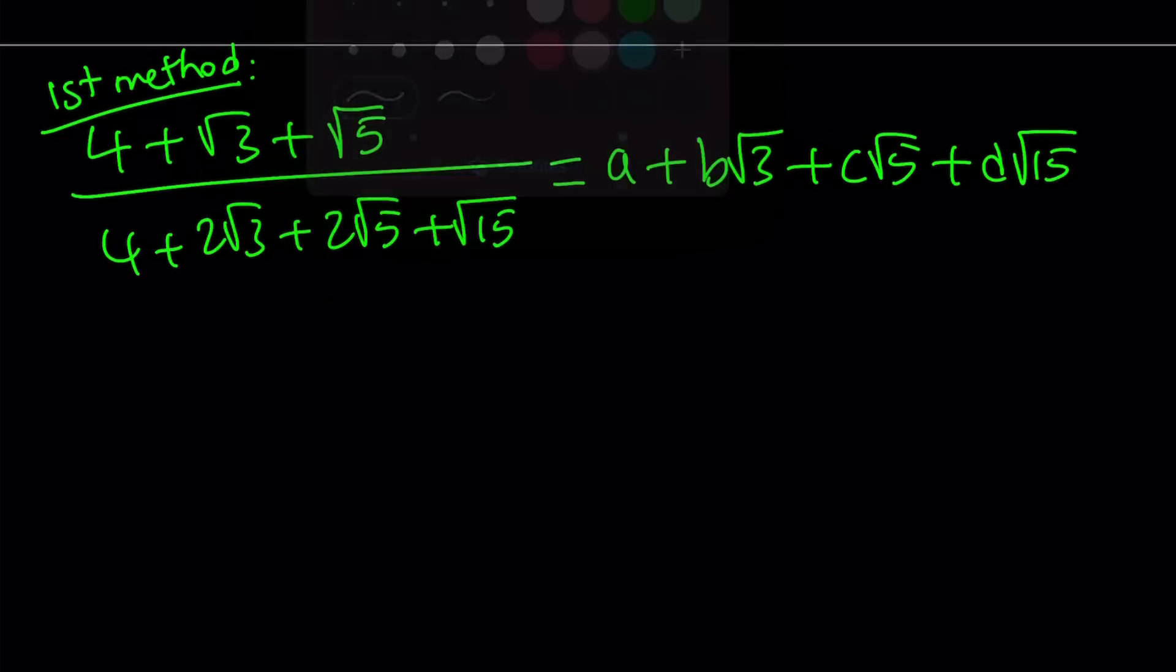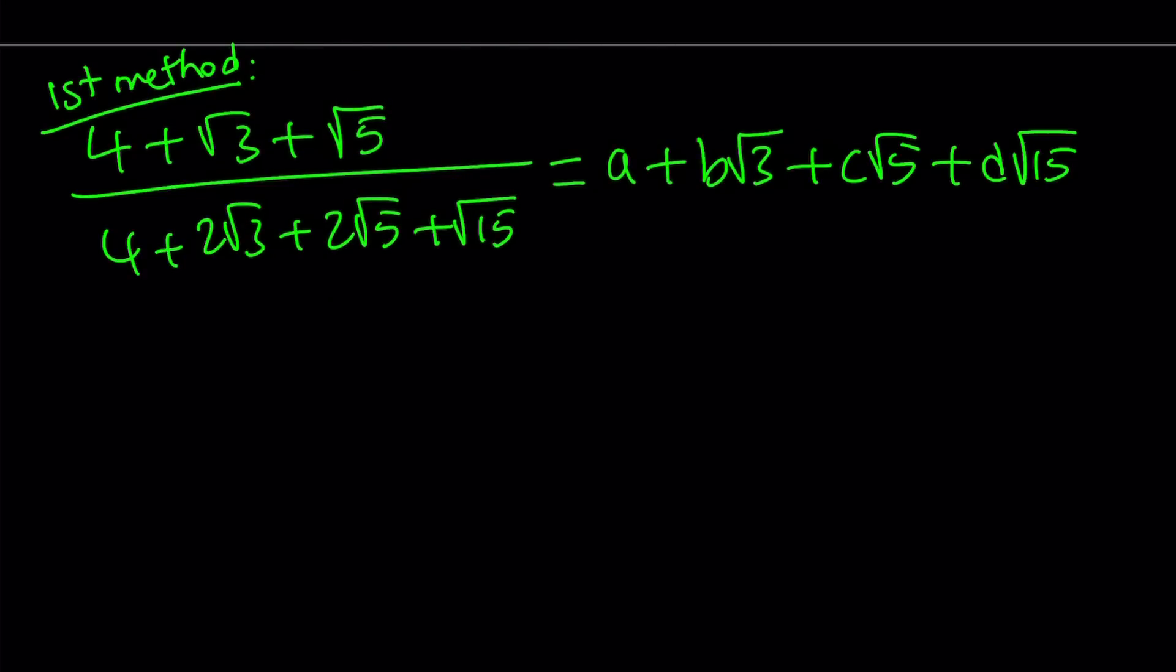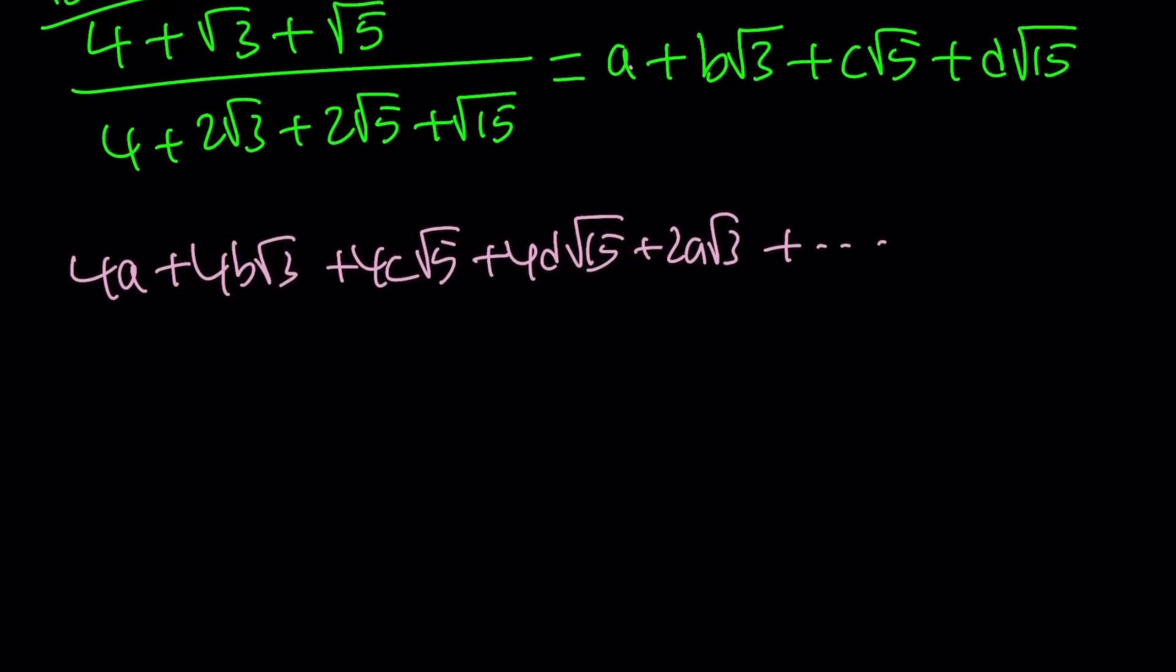Let's cross multiply and set the coefficients equal to each other. For example, I'm going to multiply 4 times a, that's going to give me 4a. Then I'm going to multiply 4b root 3, then 4c root 5, and then 4d root 15. And I'm going to multiply 2 root 3 by a, which is going to give me 2a root 3. You get the idea, right? Just to keep a long story short, we're going to do the following. This is going to give you, at the end, a system.